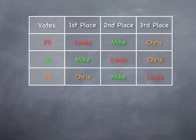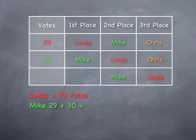Now as you know with instant runoff voting, you eliminate the lowest ranked candidate and then redistribute their votes to the second choice. In this particular case that would be Chris. Chris is eliminated and 29 votes get distributed to Mike, and therefore Mike is the winner. Linda has 39 votes and Mike has 59.